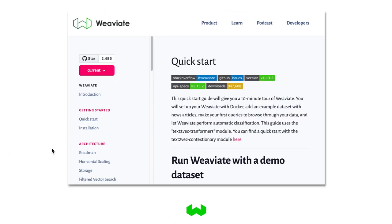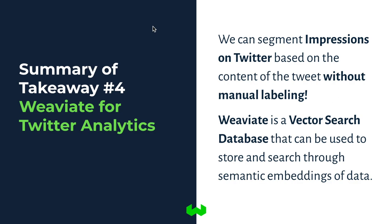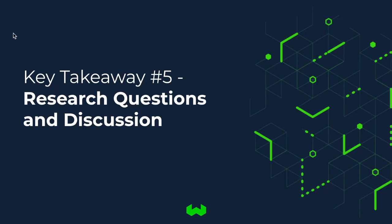To summarize section four on using Weaviate for Twitter analytics: we can segment impressions on Twitter based on the content of tweets without manual labeling, using vector representations from a pre-trained sentence transformer. We saw Weaviate as a vector search database and how we can use it to store and search through semantic vector embeddings of data. If you want to get started, I highly recommend checking out the quickstart guide at Weaviate.